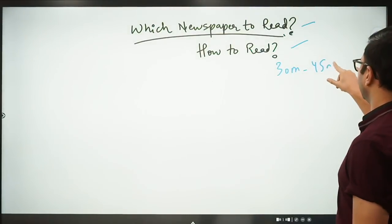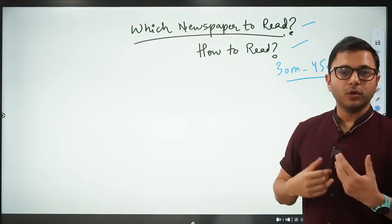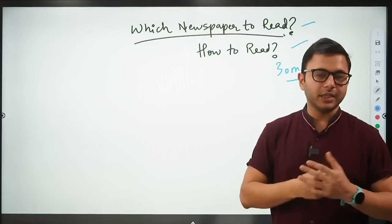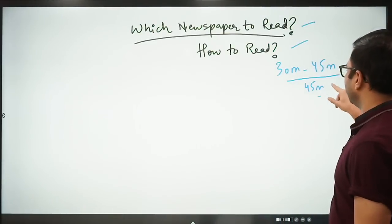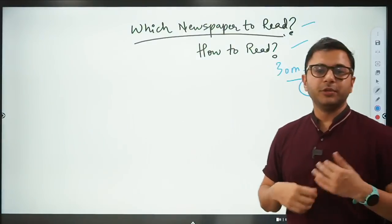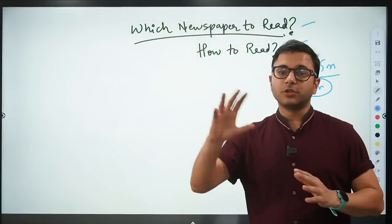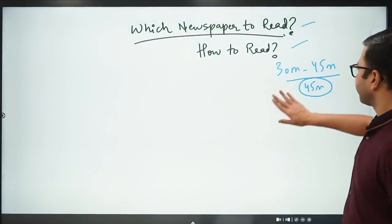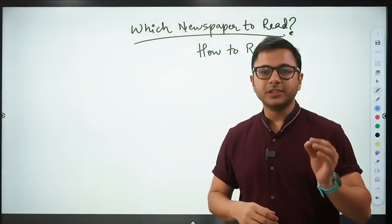Even for aspirants who are preparing while sitting at home, 45 minutes is the maximum limit. You have to cover the newspaper within 45 minutes. If you are taking two hours, two and a half hours, then you are wasting a lot of time that could have been used somewhere else. Let's now answer the first question, which newspaper to read.